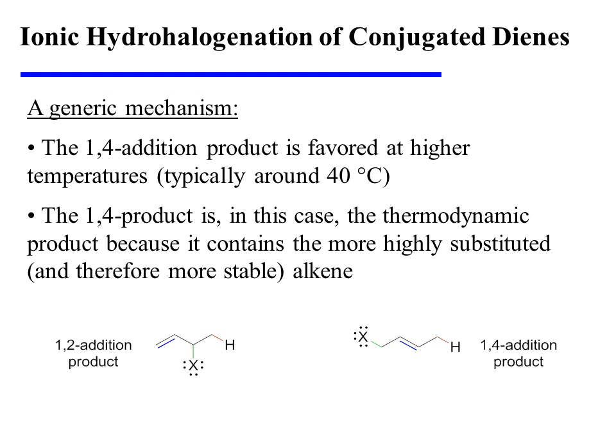In this case, the 1,4 addition product is favored at higher temperatures, typically around 40 degrees Celsius. The 1,4 product is, in this specific example, the thermodynamic product because it contains the more highly substituted, and therefore more stable, alkene.